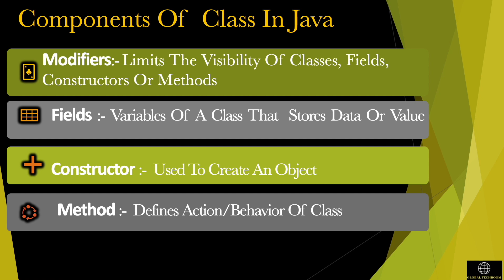The functionality of the members of a class can be protected from other parts of the program by the presence of modifiers. Modifiers limit the visibility of the classes, fields, constructors or methods in the Java program. By convention, a class name should begin with a capital letter and following characters should be lowercase.